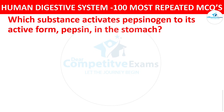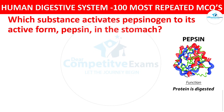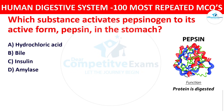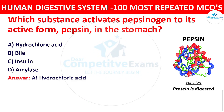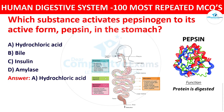Question number nineteen: Which substance activates pepsinogen to its active form pepsin in the stomach? Your options are hydrochloric acid, bile, insulin, or amylase. The right answer is hydrochloric acid. Hydrochloric acid in the stomach activates pepsinogen, converting it into the active enzyme pepsin.